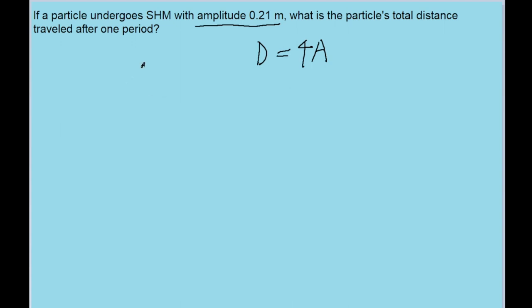The problem doesn't say what kind of simple harmonic motion this is, but it doesn't matter. So let's just say it's a pendulum, and let's say it's right here. Let's say this is the middle point, this dotted line's the middle point, and that this distance right here is the amplitude, A, because the amplitude is its total distance from the central rest position.